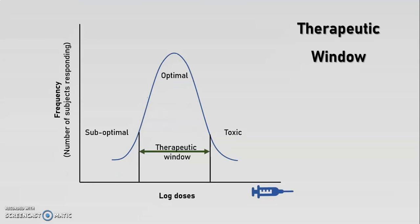This frequency distribution curve reveals that the same dose regimen produces high plasma concentration and toxicity in some patients, while producing low plasma concentration or insufficient response in others. In between, there is an optimal therapeutic range of plasma concentration at which most patients experience the desired effect. This optimal therapeutic range of plasma concentration is called the therapeutic window. Drugs like digoxin, quinidine, and phenytoin have a low therapeutic window, as a small increase in plasma concentration leads to toxic effects.